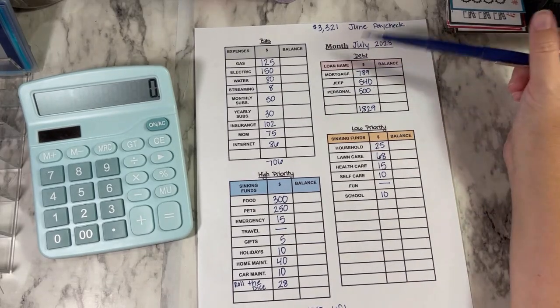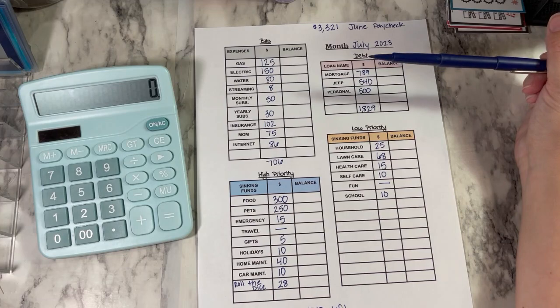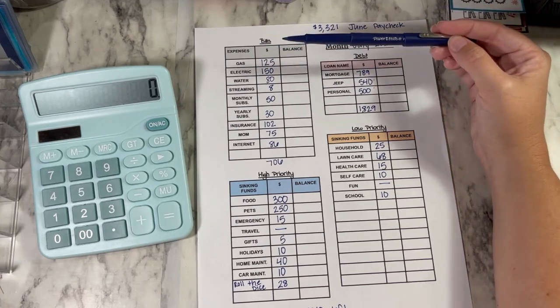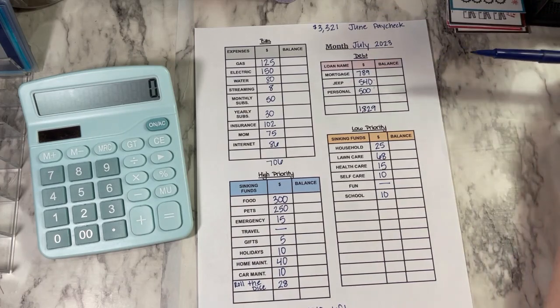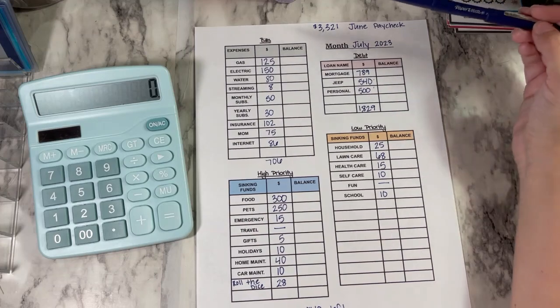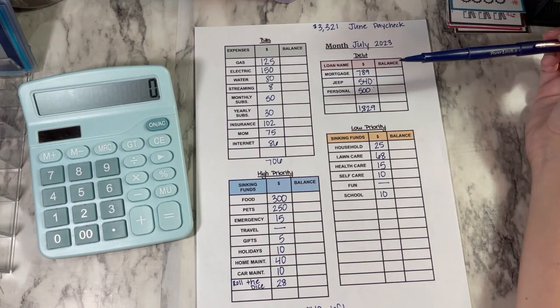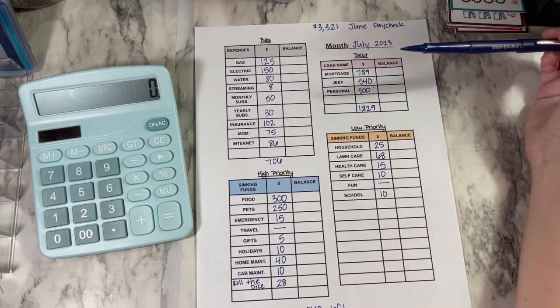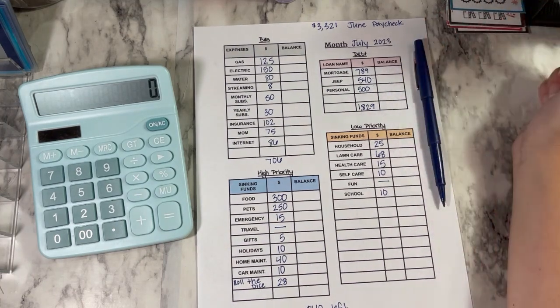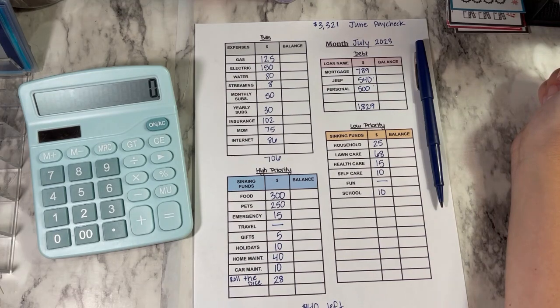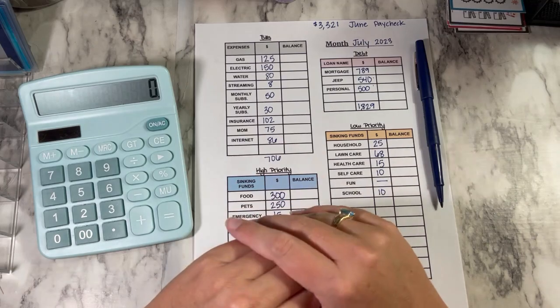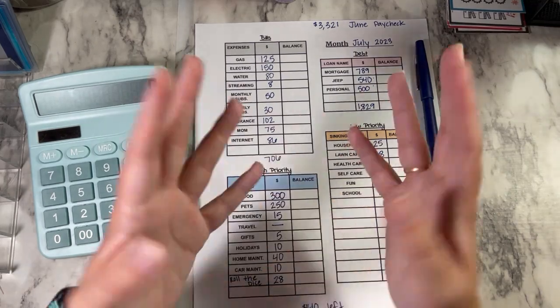And so then what I do once my budget is done is I get out my cash breakdown page where I put the category, how much I'm taking out, and then I decide what bills I want for that category. So that when I go to the bank on payday, I know exactly how many of each bill I need and the teller is, it's easy for the teller. So I will show you that in my next video, but if you have any questions about my budget, you can leave those down in the comments below. And again, don't forget to hit that subscribe button to follow along on this journey with me. I will see you in the next one. Bye.